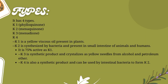Vitamin K has several types: K1, a phylloquinone derivative — a yellow viscous oil present in plants. K2, a menaquinone derivative, synthesized by bacteria and present in the small intestine of animals and humans — it is 75% as active as K1. K3, menandione, is a synthetic product crystallized as yellow needles from alcohol and petroleum ether. K4 is also a synthetic product and can be used by intestinal bacteria to form K2.